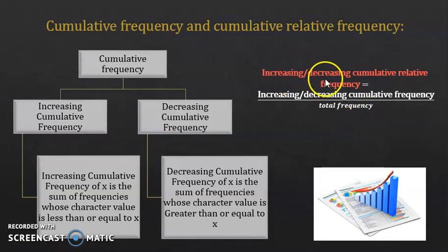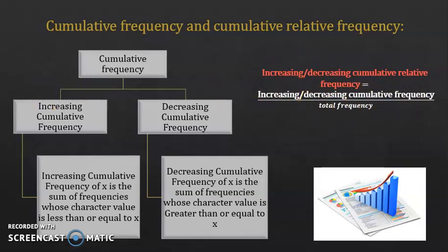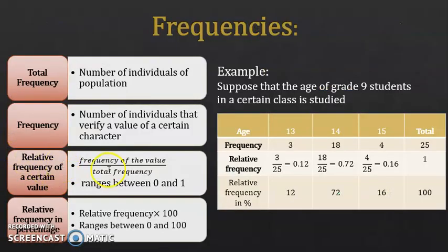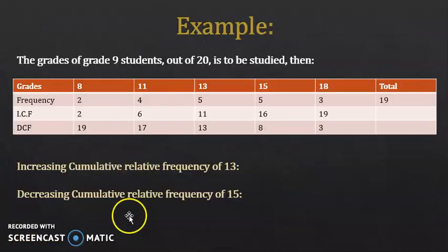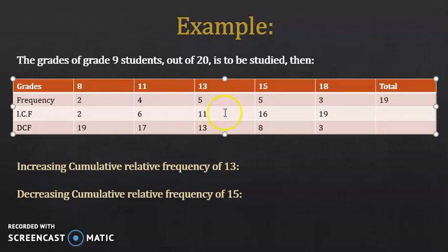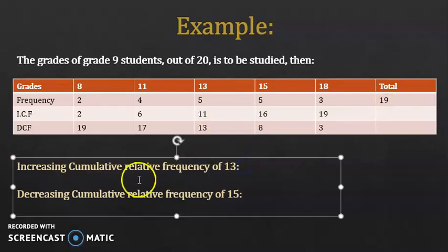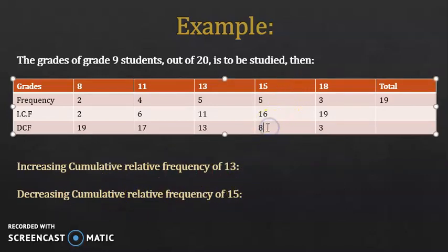The increasing or decreasing cumulative relative frequency is the increasing or decreasing cumulative frequency divided by the total frequency — the same concept as relative frequency but using cumulative frequency instead. For example, the increasing cumulative relative frequency of 13 is 11 over 19, and the decreasing cumulative relative frequency of 15 is 8 over 19.